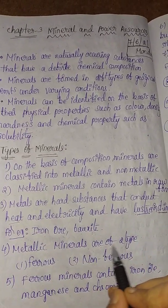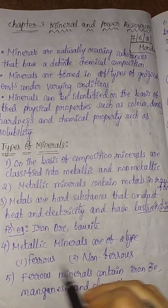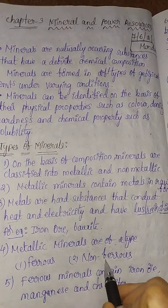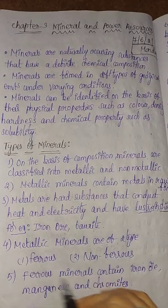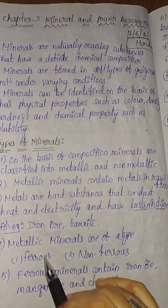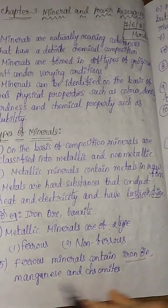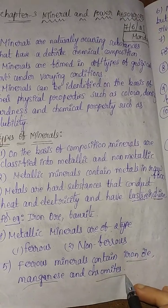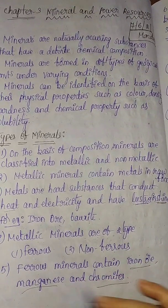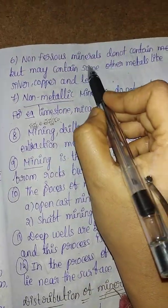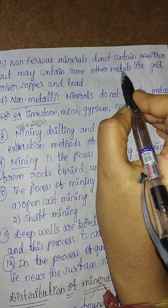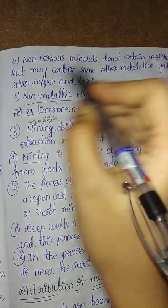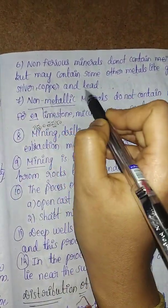Metallic minerals are of two types: ferrous and non-ferrous. Ferrous minerals contain iron — iron, manganese, chromates. Non-ferrous minerals include other metals like silver, copper, and lead.